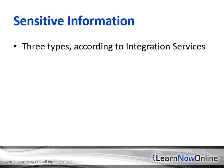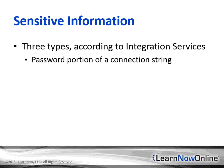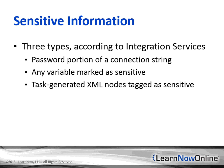Integration Services automatically defines three kinds of information as sensitive. If these are the only locations where your package contains sensitive information, then you protect it by default. Integration Services defines sensitive information as: the password portion of a connection string — though if you choose a protection level that encrypts everything, the whole connection string is considered sensitive; any variables marked as sensitive, which applies to system variables that could contain sensitive information; and task-generated XML nodes that are tagged as sensitive.